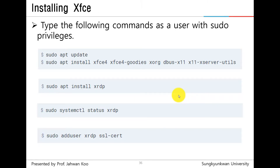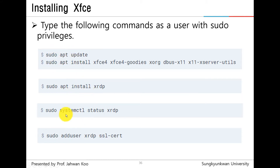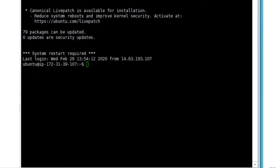Type the following command as a user with sudo privileges to install XFCE. First, you have to write down sudo apt update in order to update your Ubuntu repositories. And then, you will install XFCE related utilities.